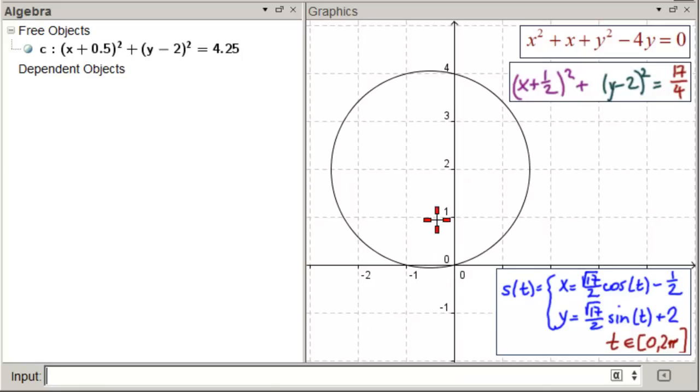Here's our center at minus 1/2, 2. And we can see that our radius is about the square root of 17 is a little bit more than 4 over 2. So, about 2 and something, right? Okay. So, that's our first circle. Let's see that our completing the square is correct. Next one down. We're still in the input bar. (x + 1/2)² + (y - 2)² = 17/4. Hit enter. Good job.